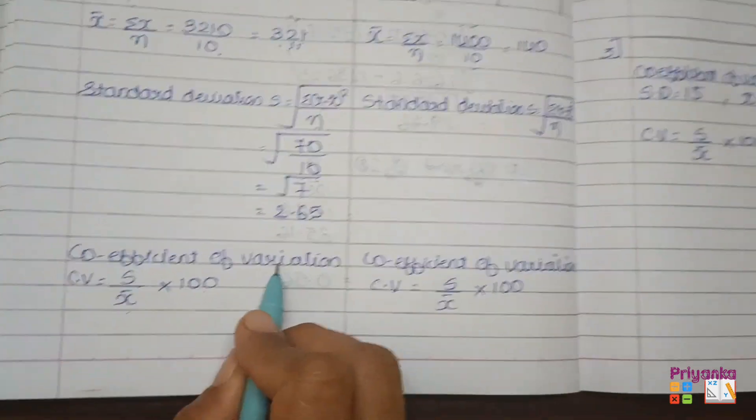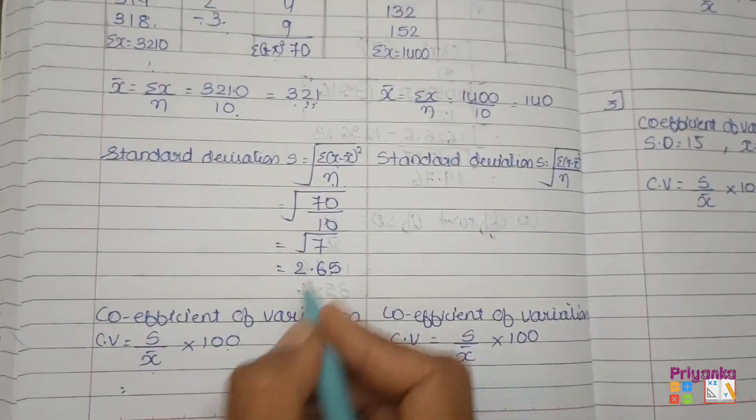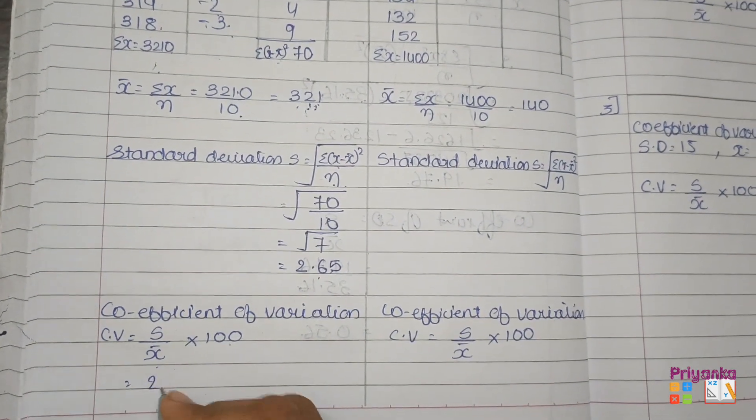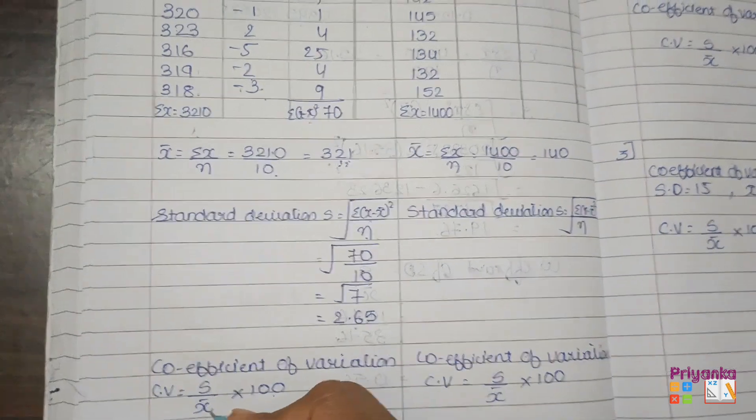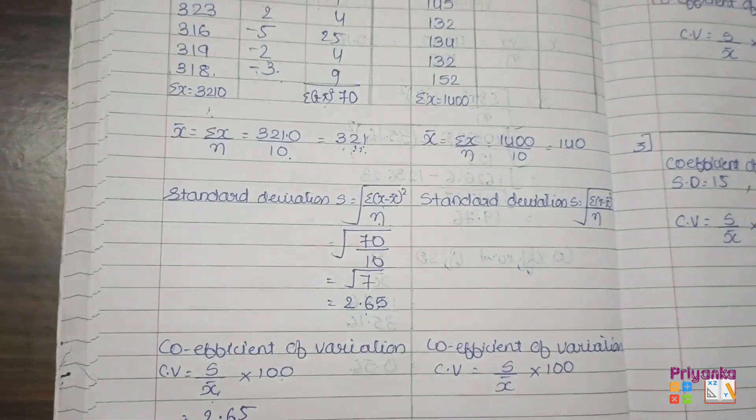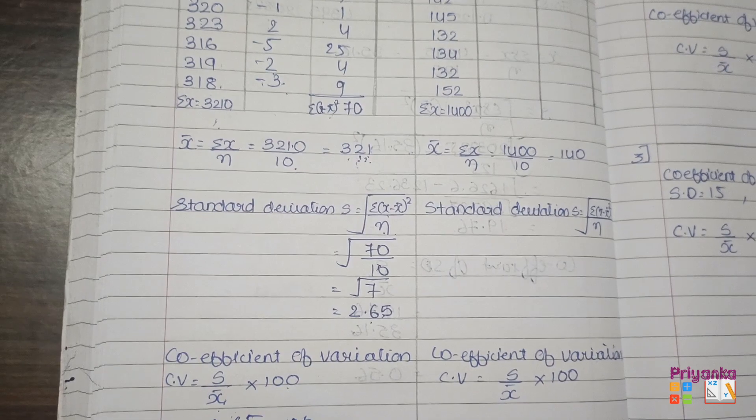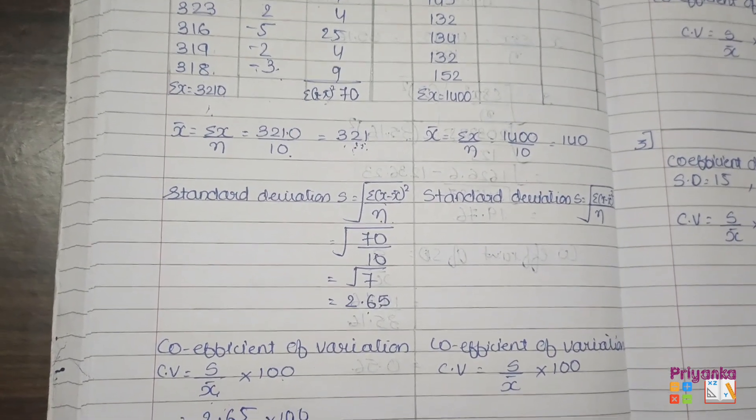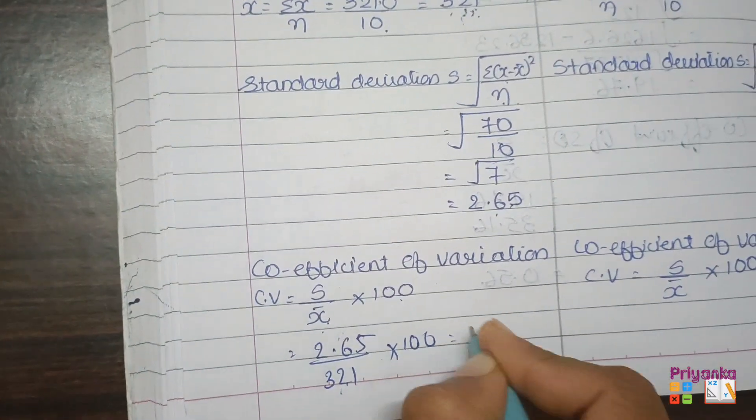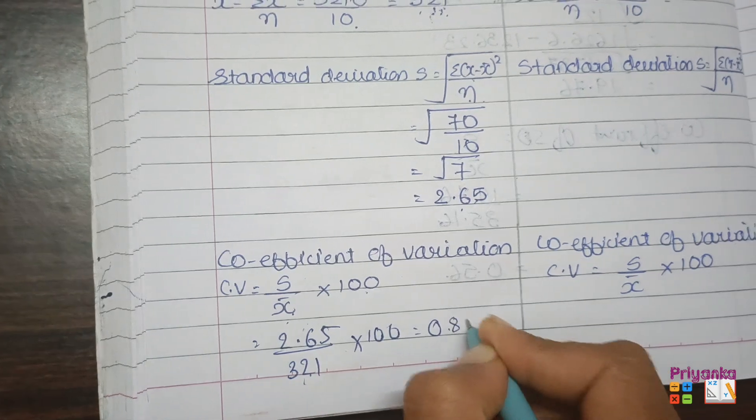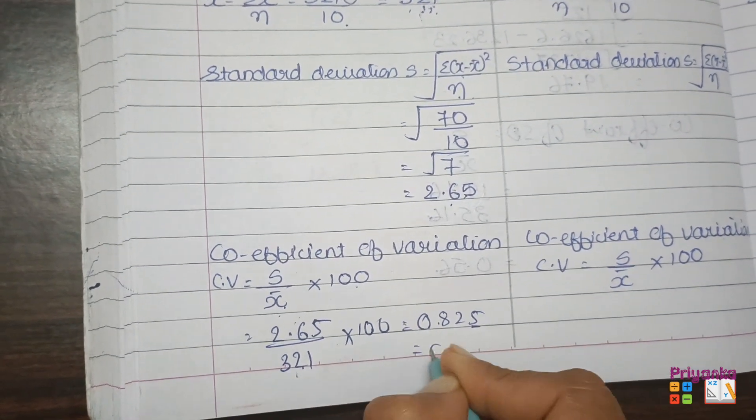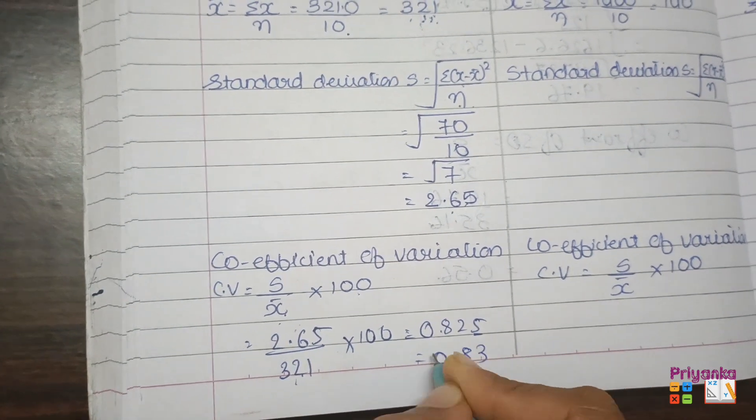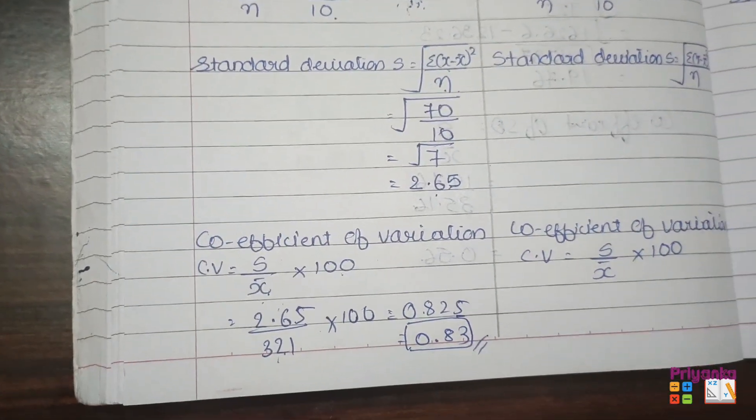Now we will find out coefficient of variation. For this, here we have the value of standard deviation, that is 2.65 divided by mean that is 321 into 100. Get it divided and then multiply by 100, we get 0.825. The third digit is 5, so the number will change to 0.83. That's the coefficient of variance we found.